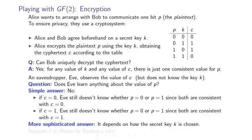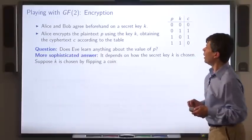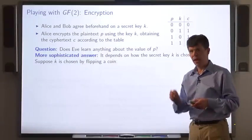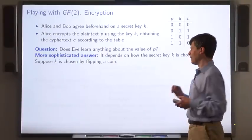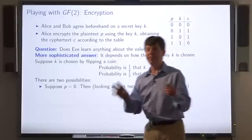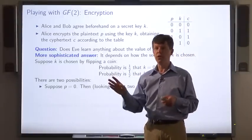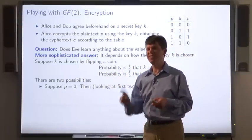Here's a somewhat more sophisticated answer. It depends on how the secret key is chosen. So, let's suppose the secret key is chosen by flipping a coin. The probability is 1/2 that k = 0 and 1/2 that k = 1. Let's look at it from Eve's perspective. Before she even goes out to eavesdrop, she reasons as follows.